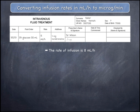The order displayed shows that a patient is ordered noradrenaline 4mg in 50mL of 5% glucose to infuse at 8mL/h.